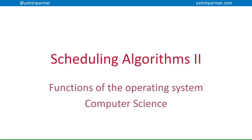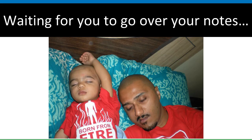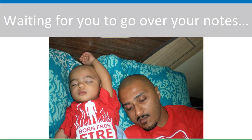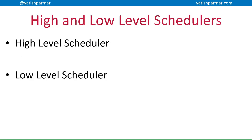This is the second video on scheduling. Before you watch it, make sure you have notes on scheduling algorithms — you know what the different algorithms are and what might be happening to a particular process during the scheduling process. This video is going to look at what the actual process of managing the job queue and priorities is, and what happens to processes when they're in the job queue.